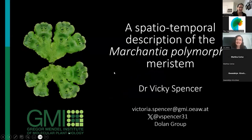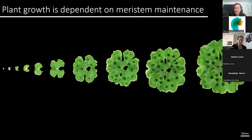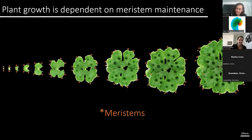Thank you very much for the introduction and for the invitation to speak today. We know that plants continually grow throughout their lifespan to adapt their architecture in response to the environment. And this continual growth is dependent on the maintenance of structures known as meristems, as we've just heard lots about.